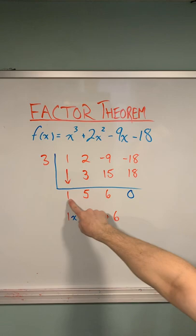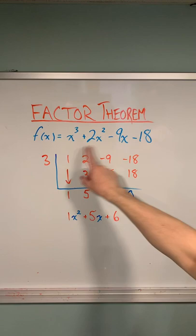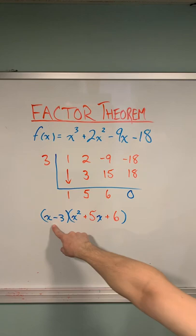We then use these values as our coefficients of our quotient, which will start with a degree one less than our original polynomial and work its way down to a degree of zero. We multiply by our original factor of x minus 3 and apply some simple trinomial factoring to fully factor this polynomial function.